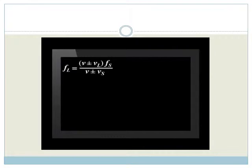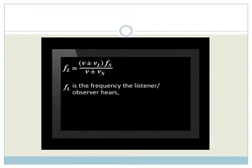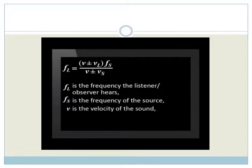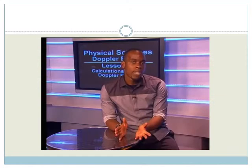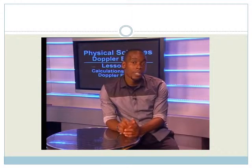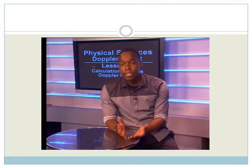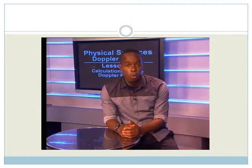Here is the Doppler effect equation, where FL is the frequency of the listener or observer, FS is the frequency of the source, V is the velocity of the sound, VL is the velocity of the listener, and VS is the velocity of the source. Sometimes the subscript L for listener is used and sometimes it is O for observer.